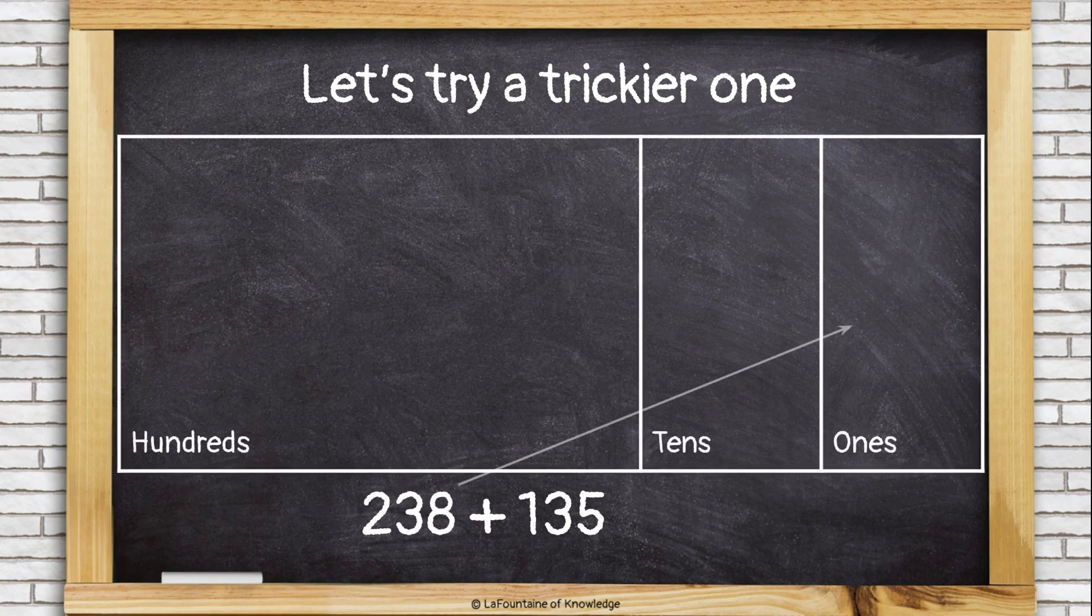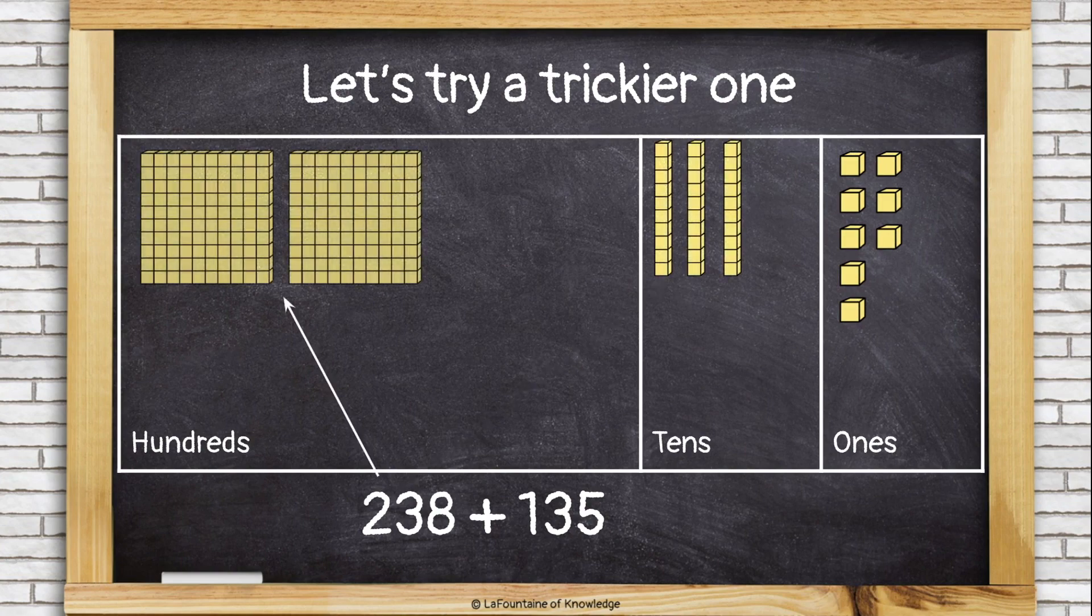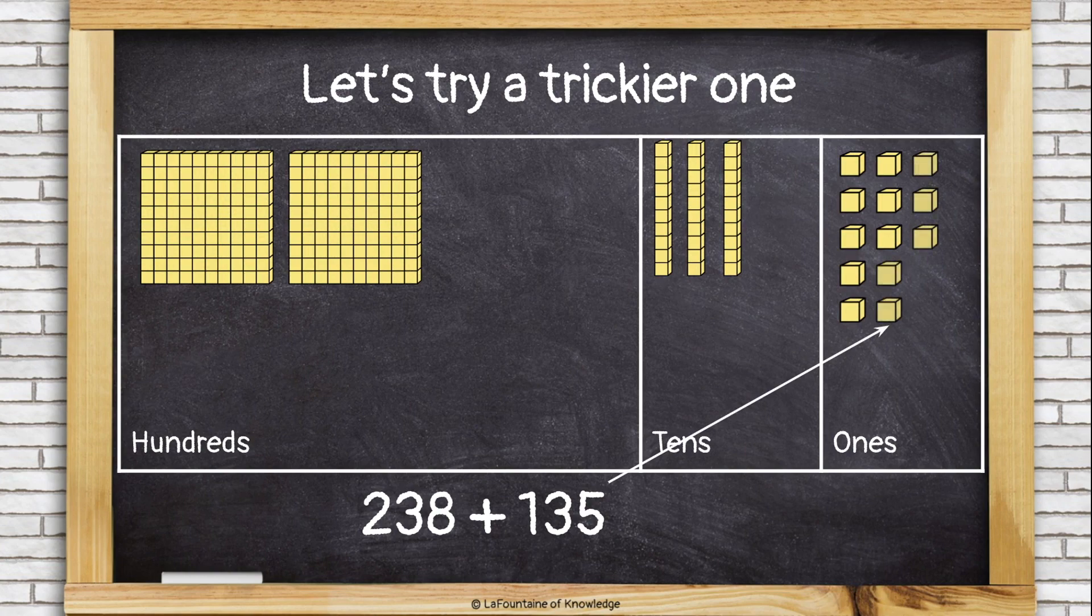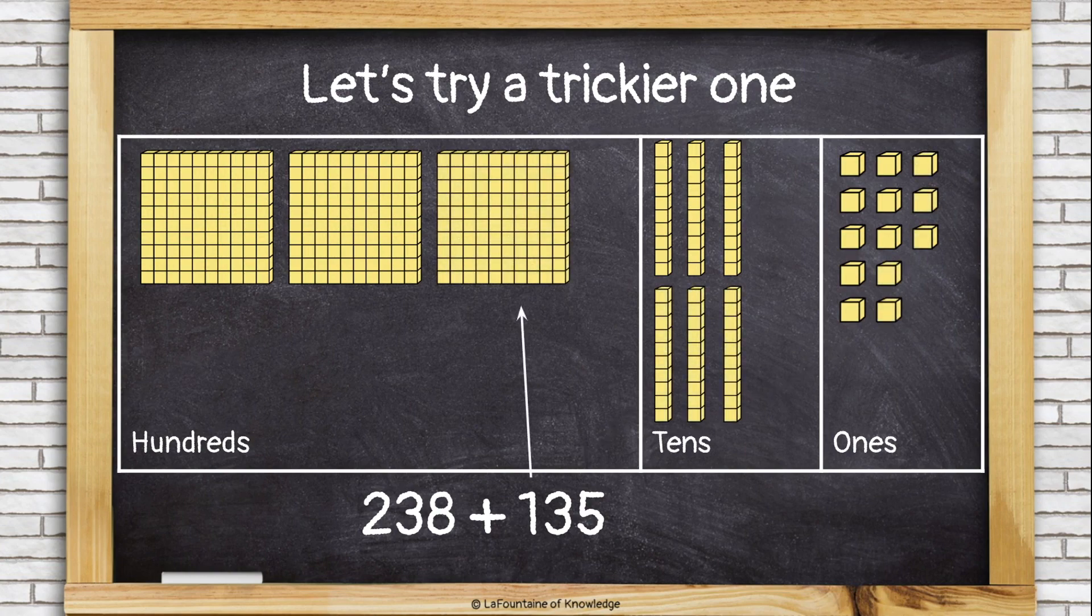Make the first number. I have 8 ones, 3 tens, and 2 hundreds. I'll make the second number. 5 more ones, 3 more tens, and another 100.